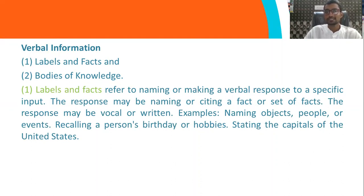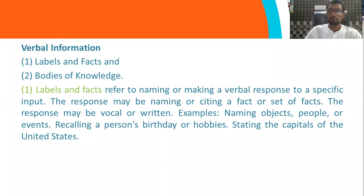For example, naming of objects is the very basic label where we try to recall things. Naming of objects, people, events, recalling a person's birthday, hobbies — these kinds of things fall under labels and facts.